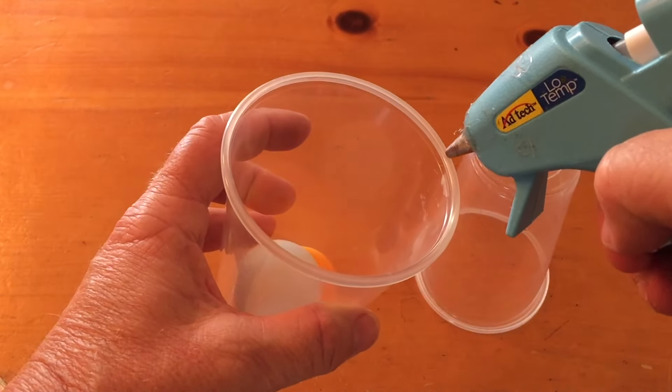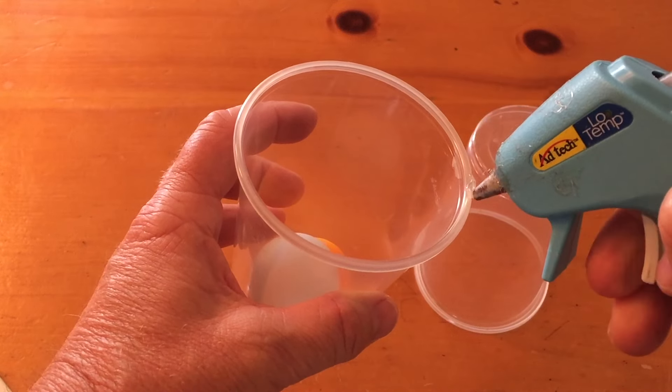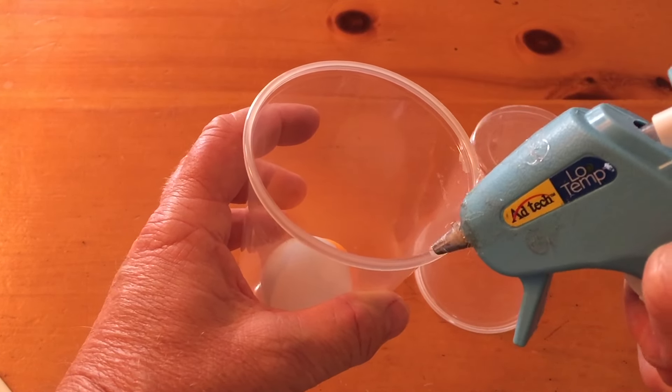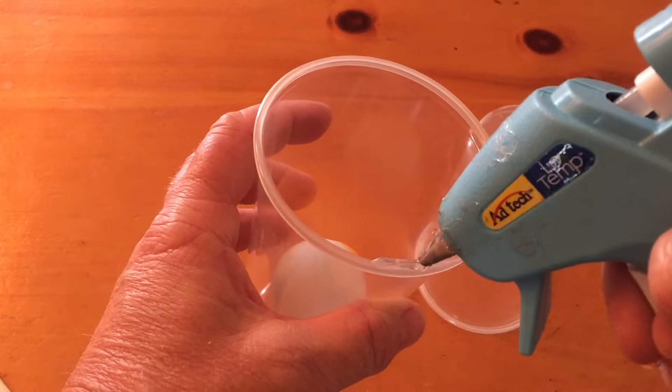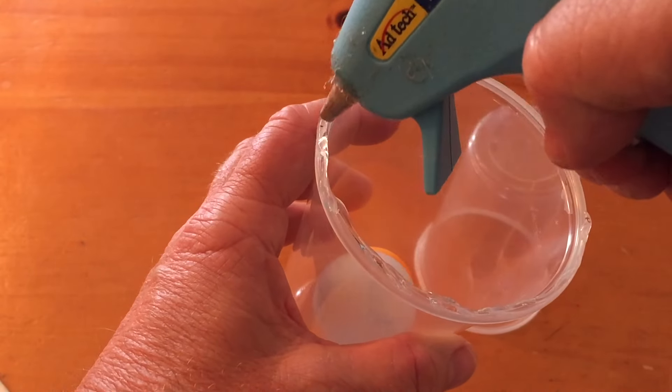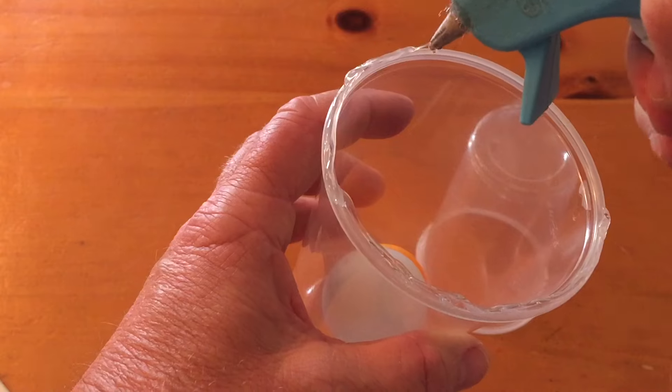Then take your hot glue gun. Have an adult help you with this as the hot glue is very hot and you can burn yourself. Go all the way around on the outside top of the cup rim right here.